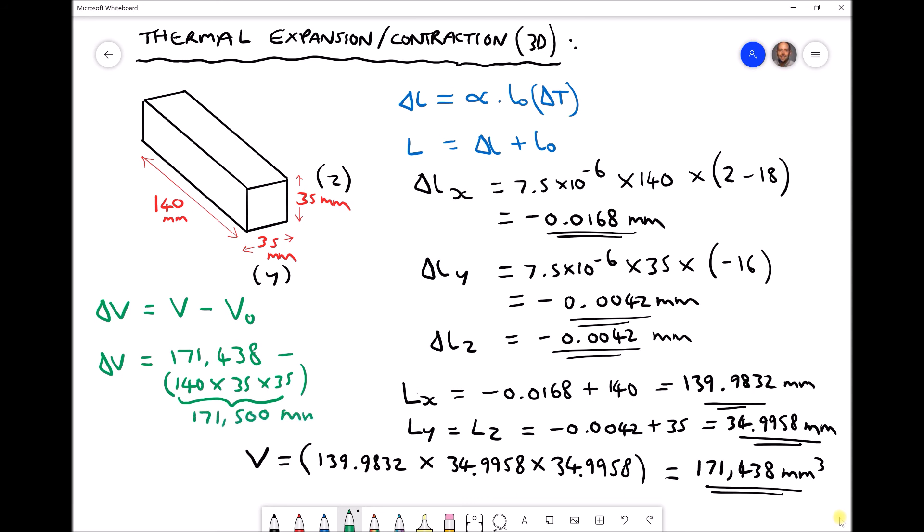Therefore, our change in volume is 171438 minus 171500, giving us a negative answer: minus 62 millimeters cubed.